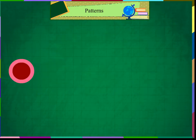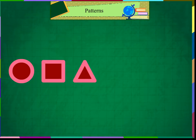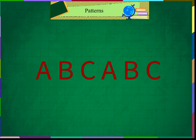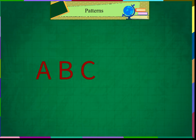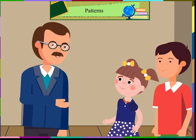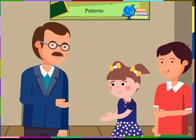This is a shape pattern. Here circle, square and triangle has repeated, creating a shape pattern. This is an alphabet pattern. Here ABC has repeated, creating an alphabet pattern. Now we have understood patterns. Thank you, Father.